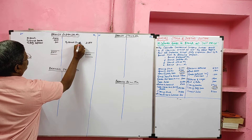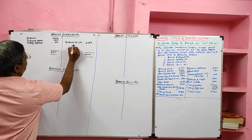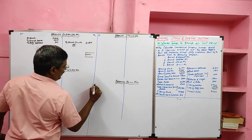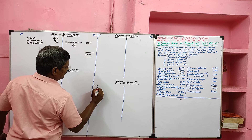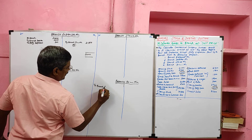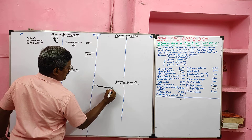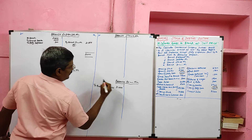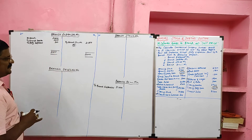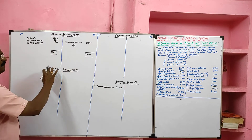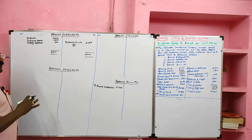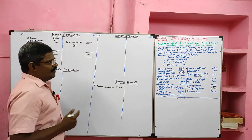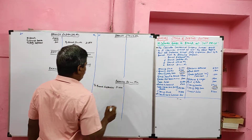The total of 31,500 should be transferred to the Branch Profit and Loss Account. In the Branch Profit and Loss Account, it should be debited as Branch Expenses, value 31,500. We have completed the Branch Expenses Account. Now we have to prepare the Branch Debtor Account, for which we will take information relating to the debtor.